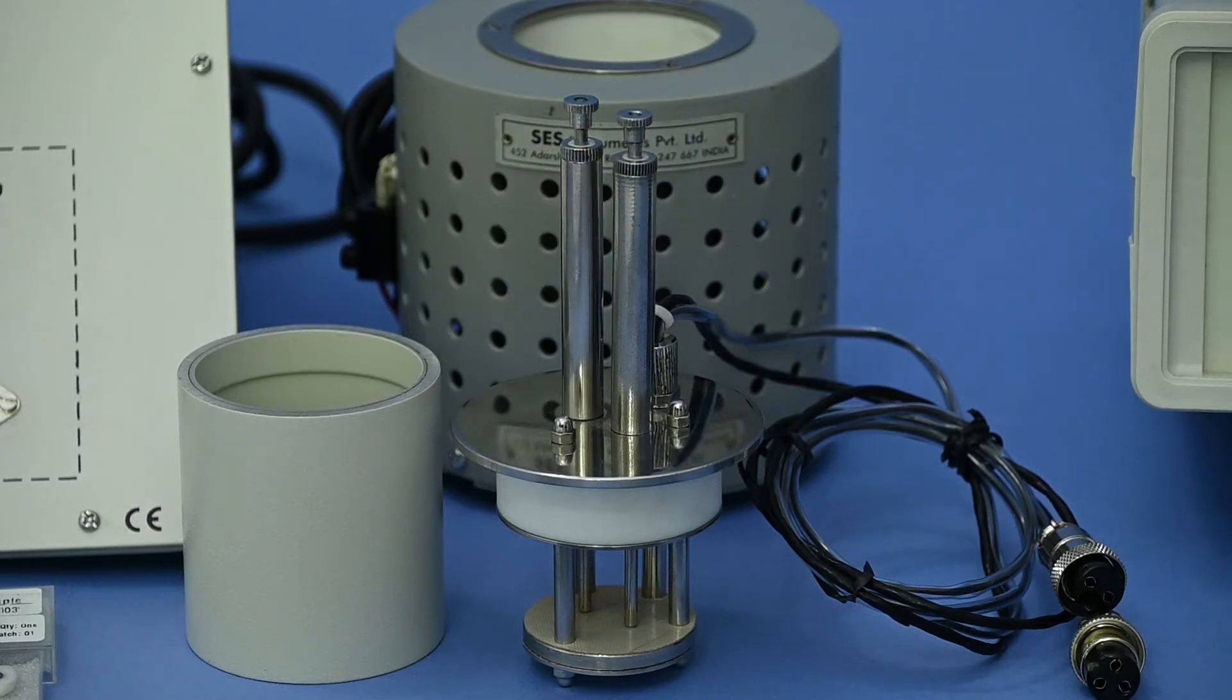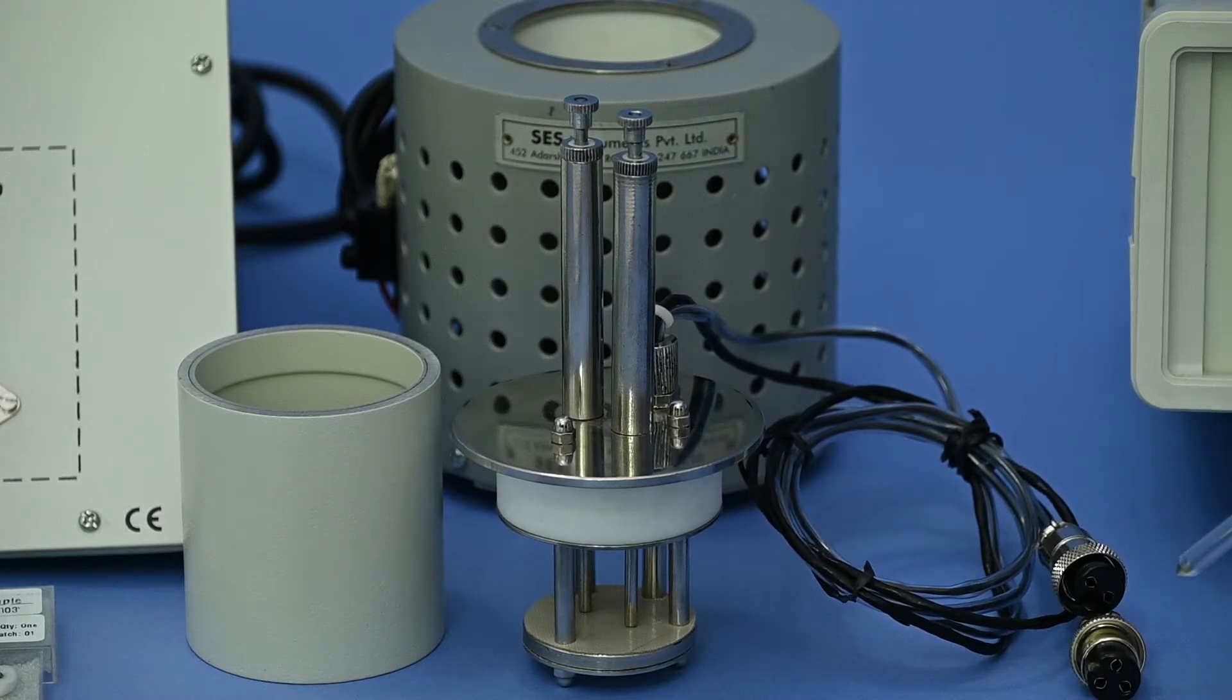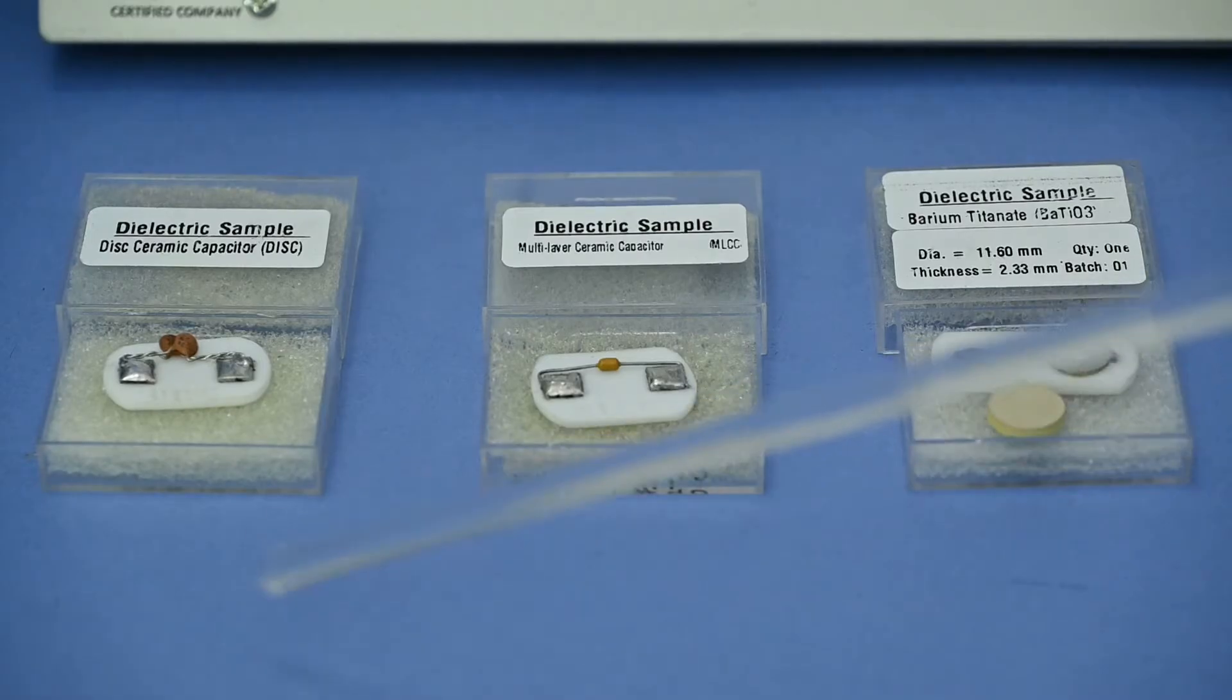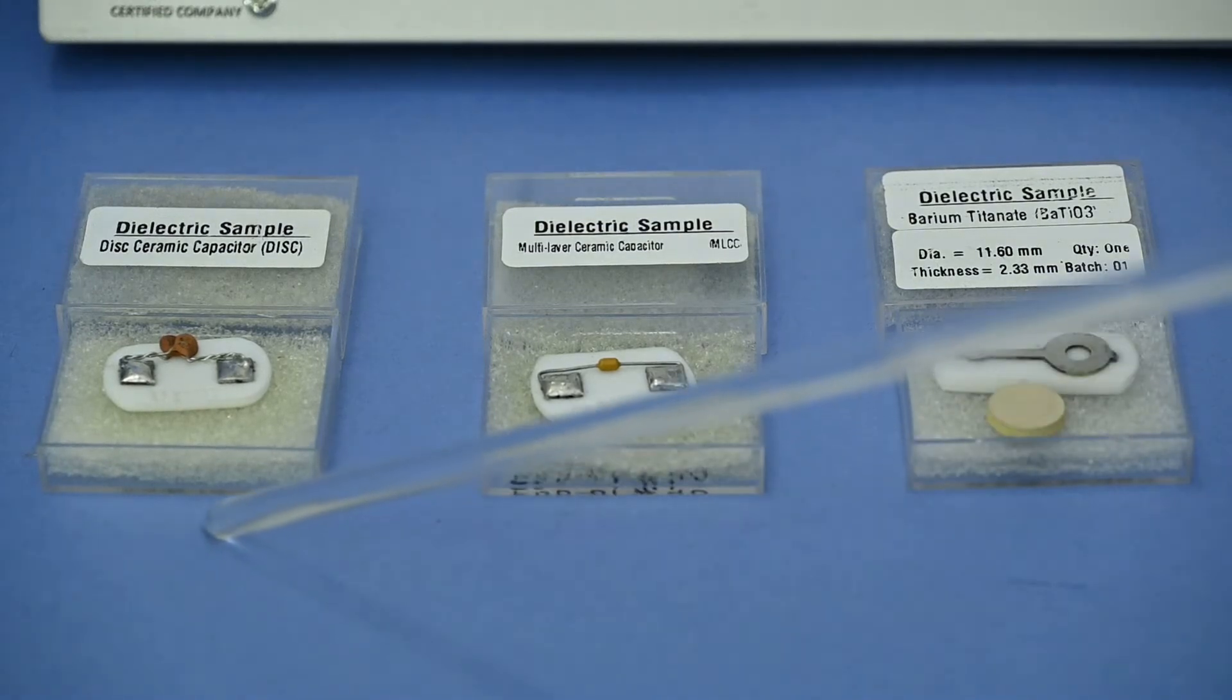There are two types of connecting leads provided for temperature measurement and connecting for the capacitance measurement. Three types of samples are given: barium titanate BaTiO3, with top and bottom surface made conducting with silver paste, standard multi-layer ceramic capacitor, and disc ceramic capacitor.